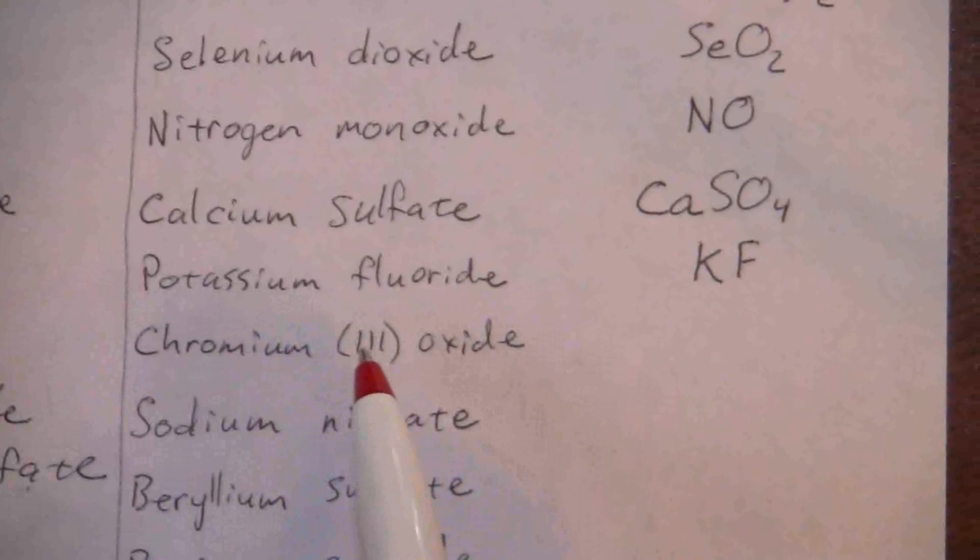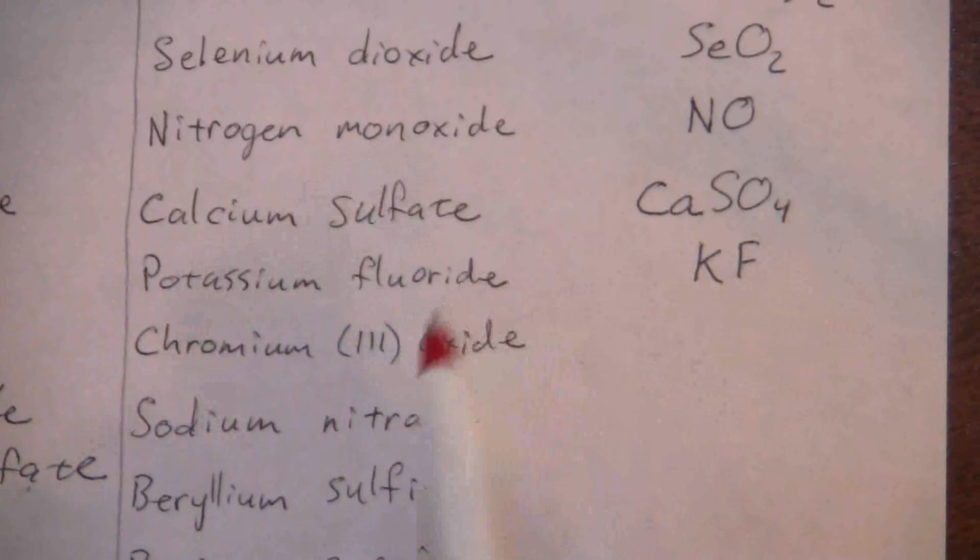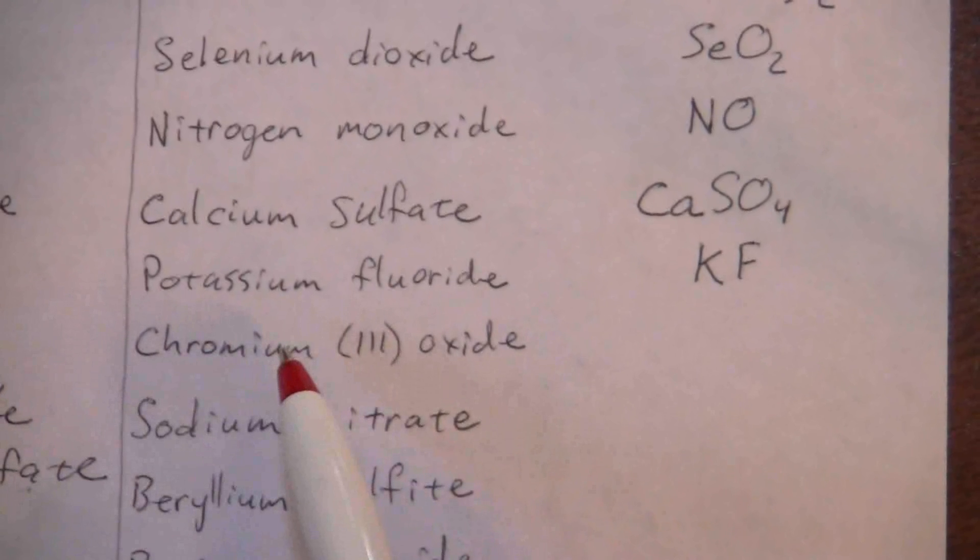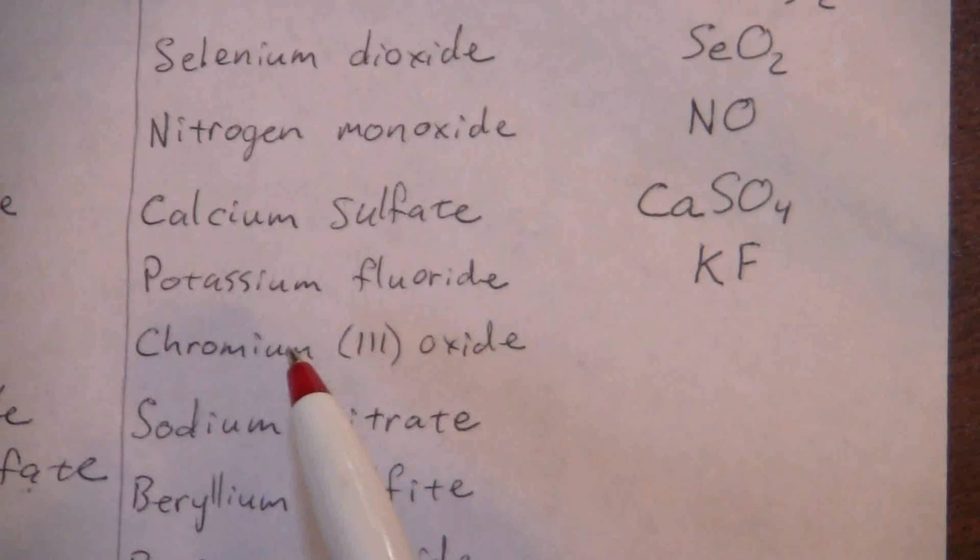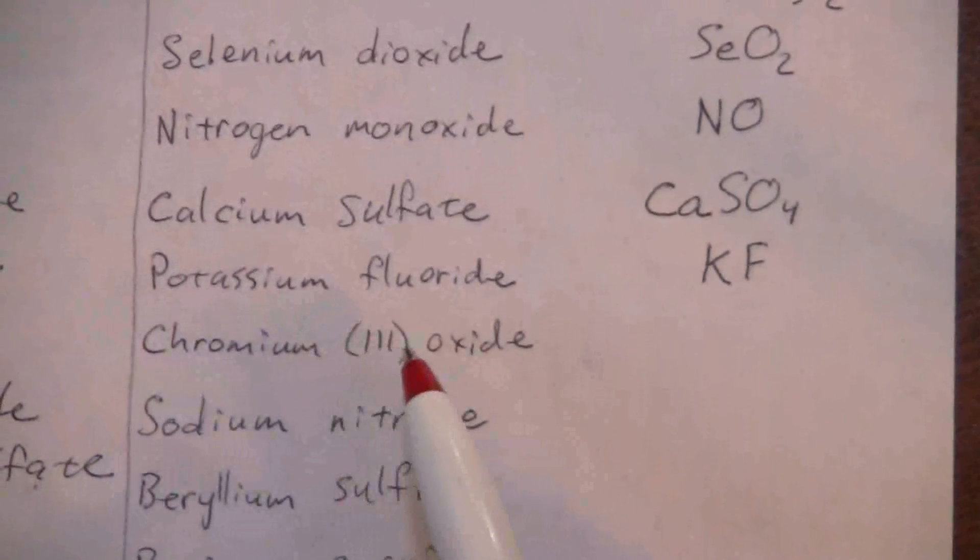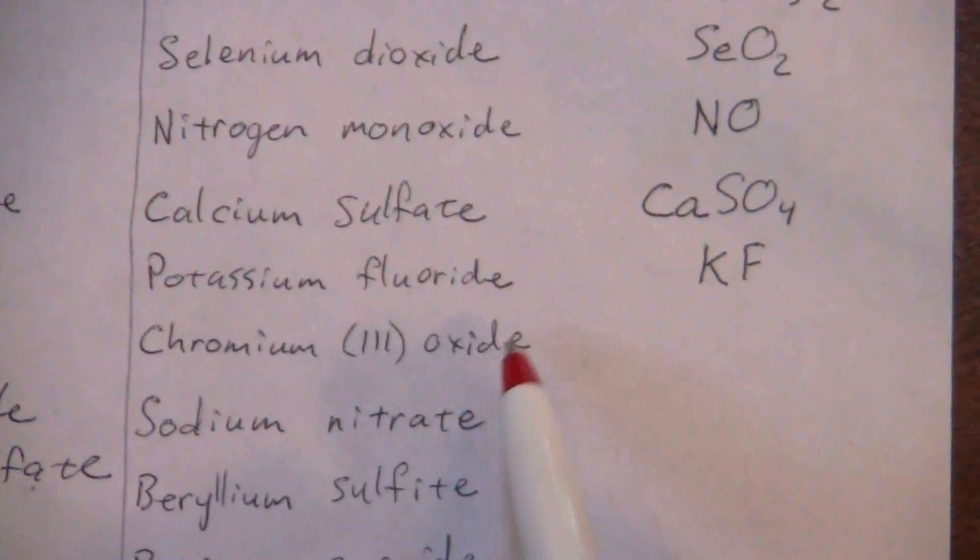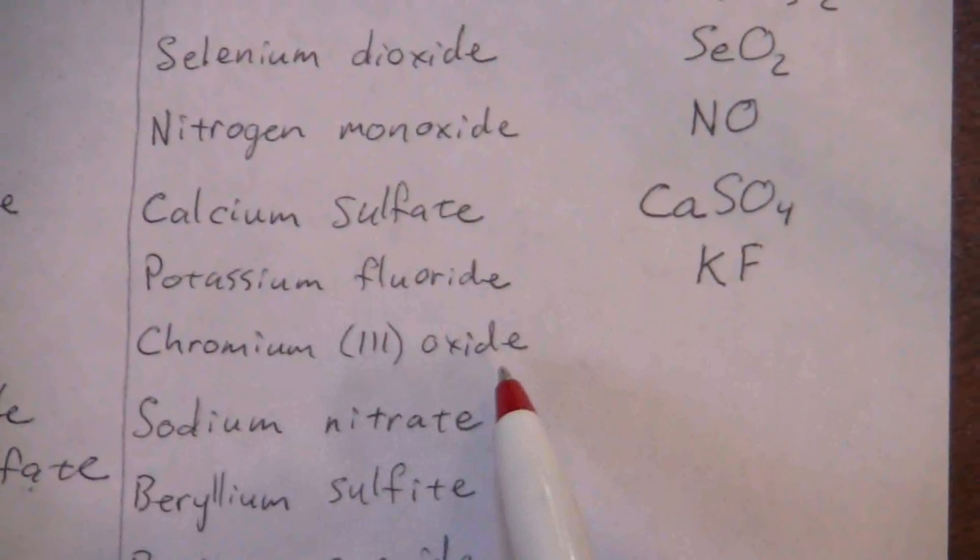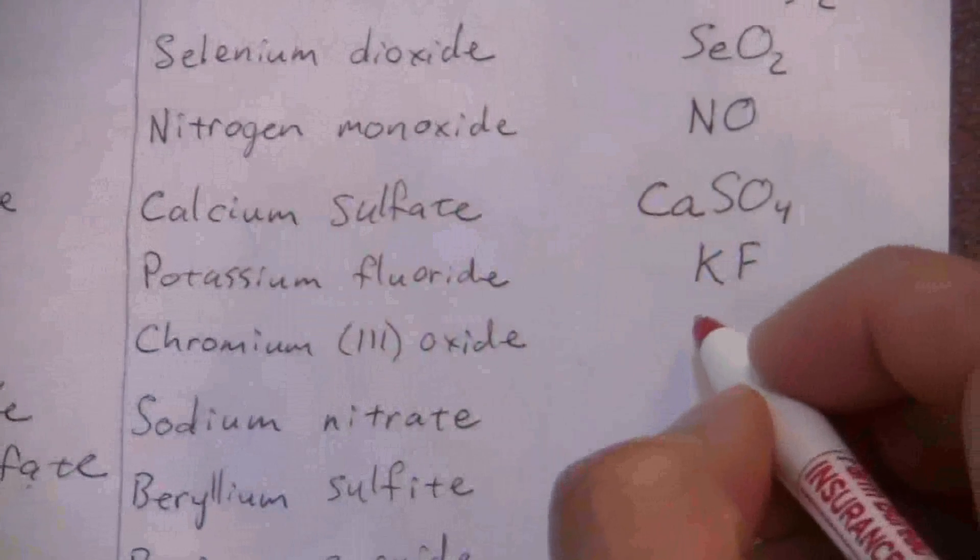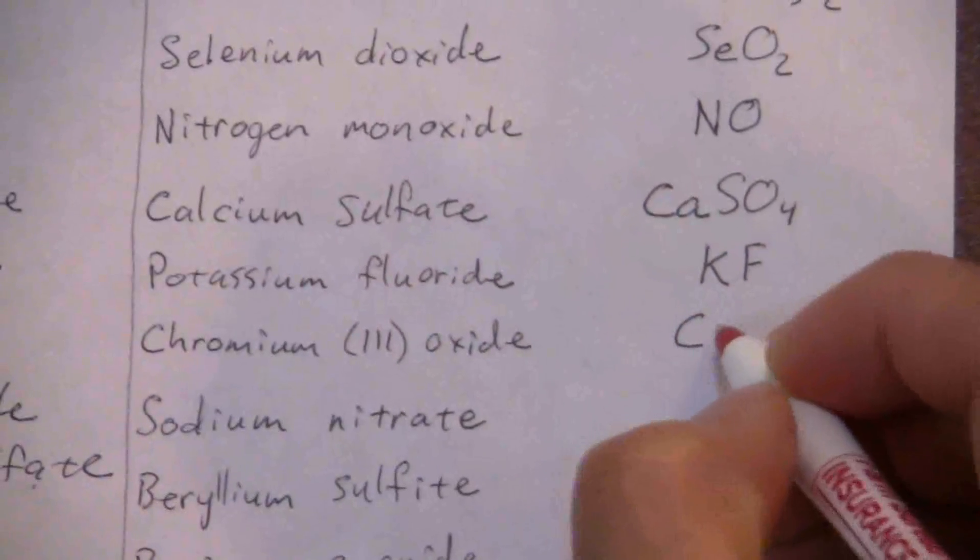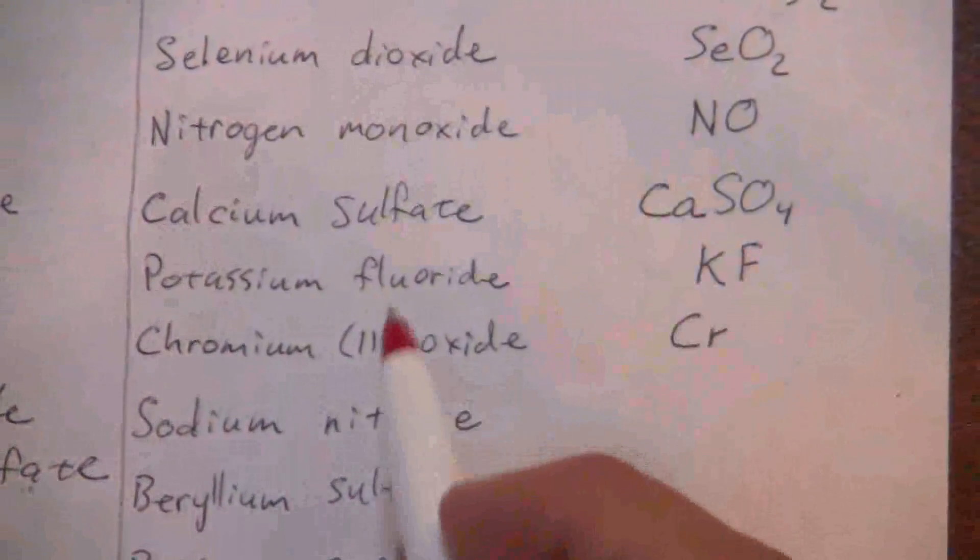Here I have chromium (III) oxide. The three Roman numeral is the charge of the chromium because that's a transition metal. Oxide - that's a negative two charge for the oxygen and a positive three charge for chromium.